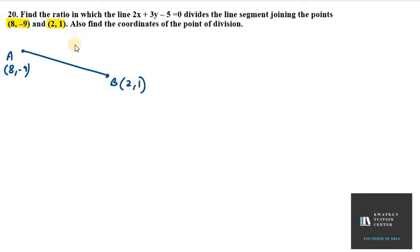Now we have a line segment which is 2x plus 3y minus 5. After this, they asked us to find the ratio. So the ratio is k:1, because we don't know anything about that. And also find the coordinates of the point of division. So I will take them as P, that is (x, y).